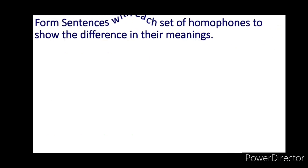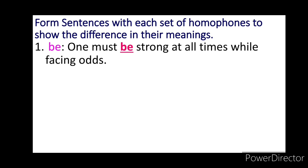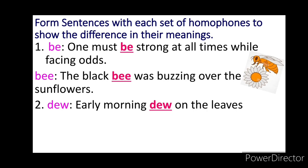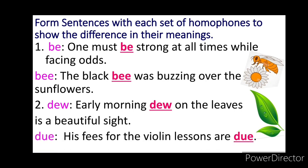Now here we have another exercise: Form sentences with each set of homophones to show the difference in their meanings. Number one — B-E: One must be strong at all times while facing odds. B-E-E: The black bee was buzzing over the sunflowers. B-E-E is a social insect. Second — D-E-W: Early morning dew on the leaves is a beautiful sight. D-U-E: His fees for the violin lessons are due. D-U-E is an obligatory payment, whereas D-E-W is water in the form of droplets appearing on exposed objects due to condensation.